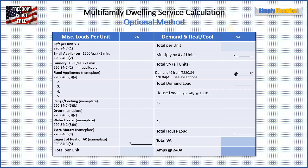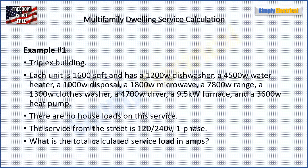Okay, let's get to our examples. Example one is a triplex where each unit is 1,600 square feet, has a 1,200 watt dishwasher, a 4,500 watt water heater, a 1,000 watt disposal, an 1,800 watt microwave, a 7,800 watt range, a 1,300 watt clothes washer, a 4,700 watt dryer, a 9.5 kW furnace, and a 3,600 watt heat pump. There are no house loads, and it is a 120/240 volt single phase service. What is the total calculated service load in amps?